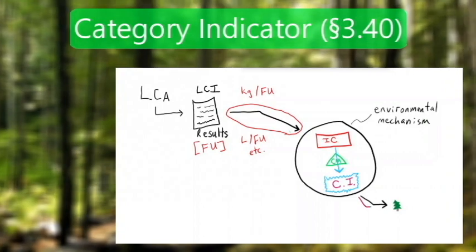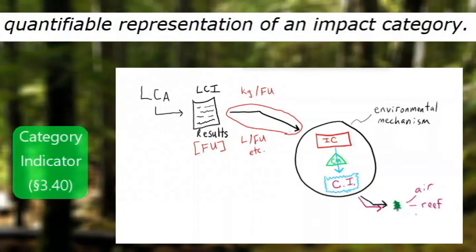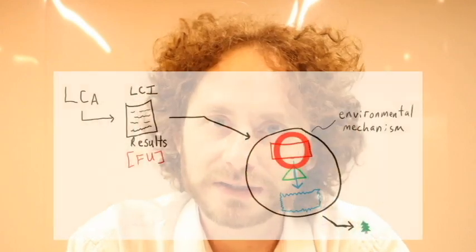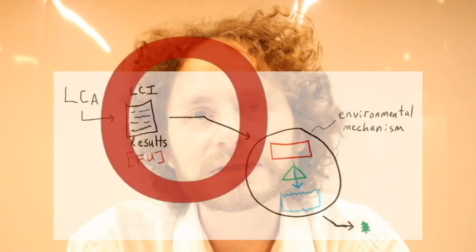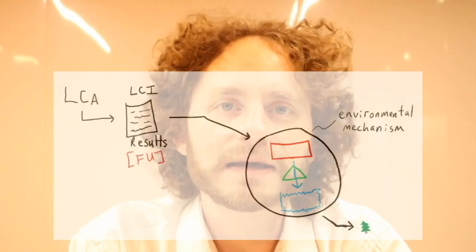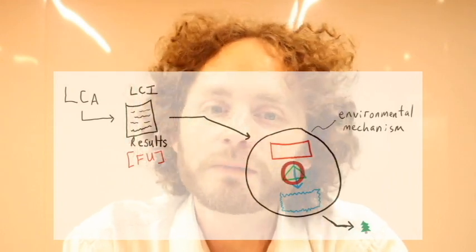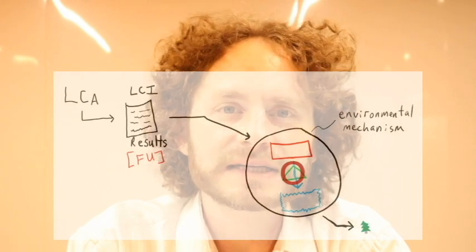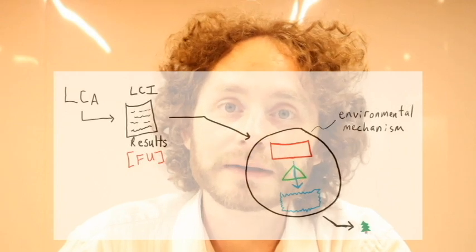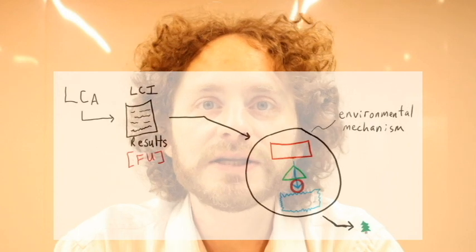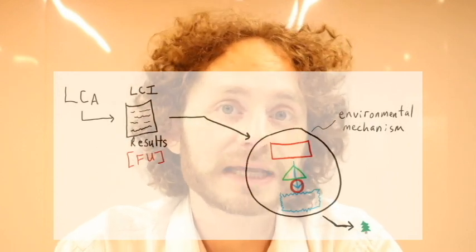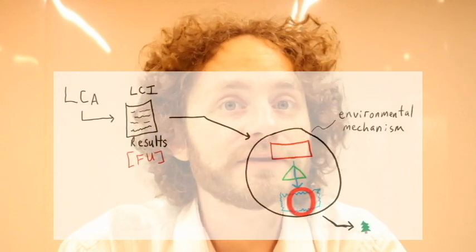A category indicator is a quantifiable representation of an impact category. ISO 14044 provides an example of this chain of information for an impact category of climate change: the LCI results stand for the functional unit and the resultant reference flow — for example, the amount of greenhouse gas per functional unit. The characterization model might be based on a well-established dataset such as the IPCC's 100-year climate change baseline model. The characterization factor might be the GWP, or global warming potential, for the target greenhouse gas. The resultant category indicator might be radiative forcing — the difference between incoming and outgoing radiative energy on planet Earth.